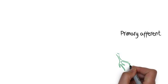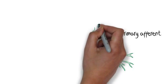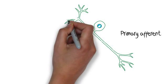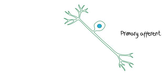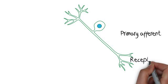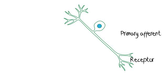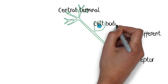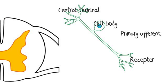Looking at a primary afferent, you'll see that it's a pseudo unipolar neuron, meaning from the cell body the axon splits and heads peripherally to the receptor end and synapse, and centrally to the central terminal. The cell body is located in the dorsal root ganglion.